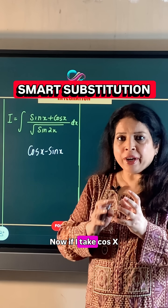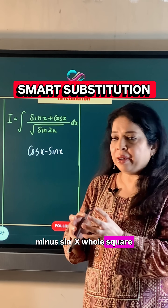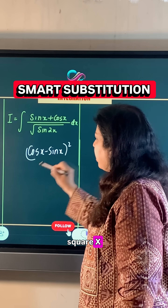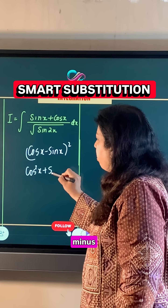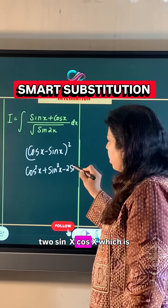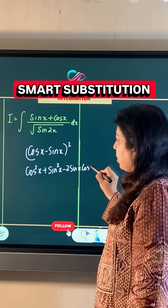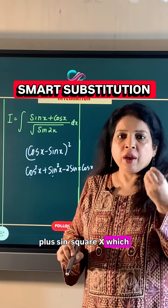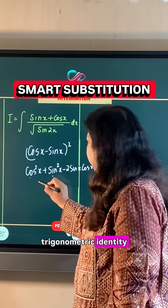Now if I take cos x minus sin x whole square, that will give us cos square x plus sin square x minus 2 sin x cos x, which is simply sin 2x.